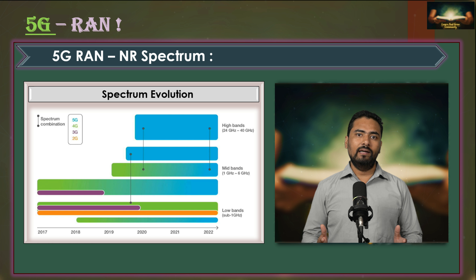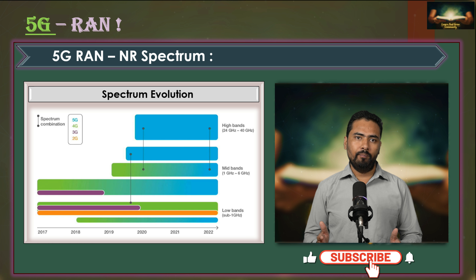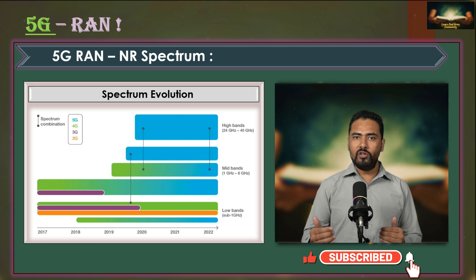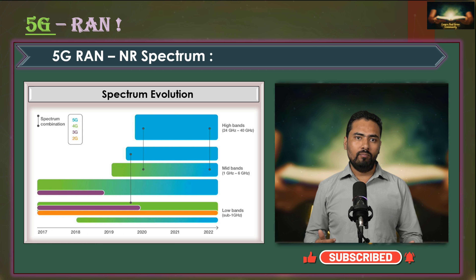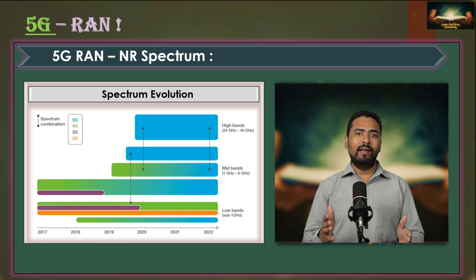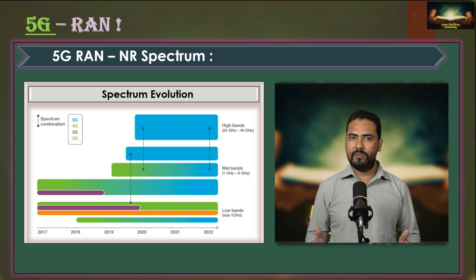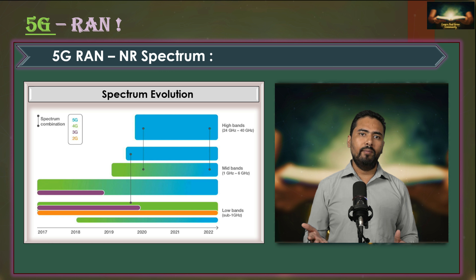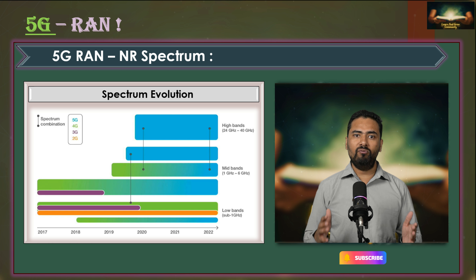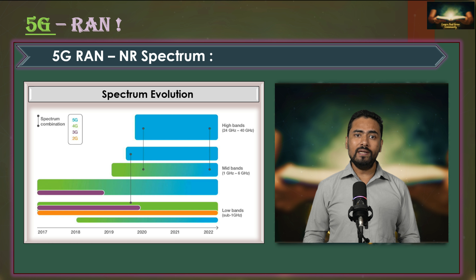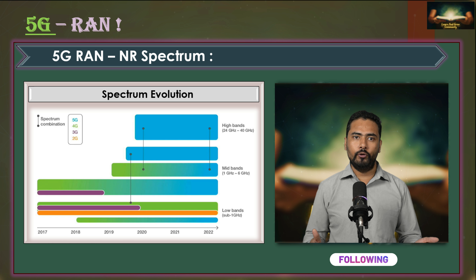Now let's see how spectrum utilization evolves over time. Here you can see the allocation and utilization of spectrum over time, where green indicates 4G and blue indicates 5G. Initially, a significant portion of newly allocated spectrum is dedicated to 5G, but over time more spectrum from the existing 4G spectrum will be reformed for 5G use, allowing us to benefit from higher spectral efficiency from 5G NR radio.